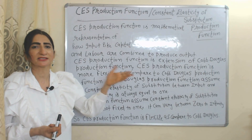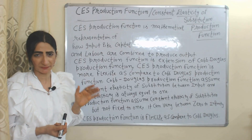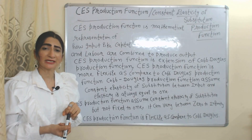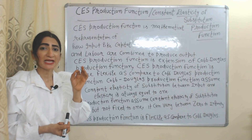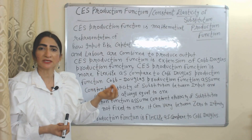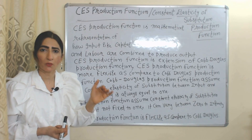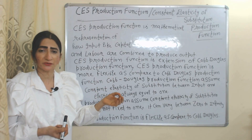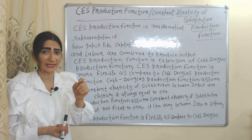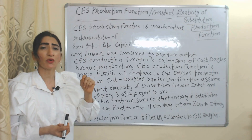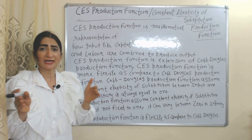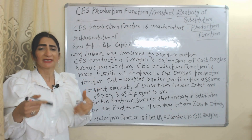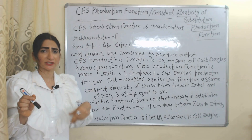CES production function is more flexible compared to Cobb-Douglas production function. Cobb-Douglas assumes constant elasticity of substitution always equal to one, whereas CES production function also assumes constant elasticity of substitution, but it can vary between zero to infinity — that's why CES is more flexible.